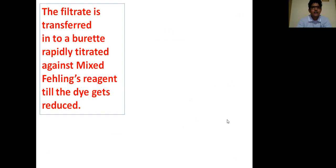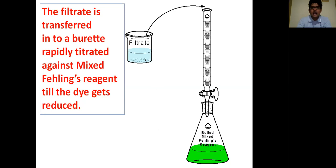The filtrate is transferred into a burette and rapidly titrated against mixed Fehling reagent till dye gets reduced. We have to use the mixed Fehling reagent in boiled form. We discussed why boiled form is required - because the atmosphere contains oxygen. This oxygen can reduce back the dye, so it should be used in boiled condition so that air oxygen is removed from the solution.